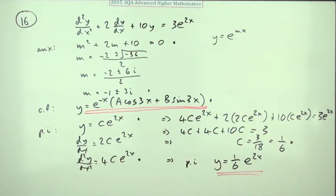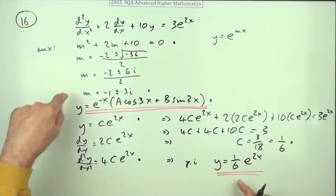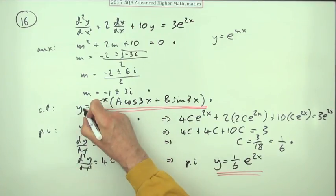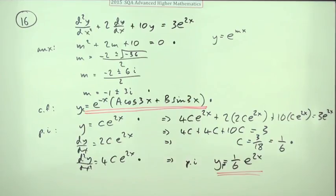There's another mark for finding c. There's no mark just for stating it back into here though. The next mark is for putting the two together to get the general solution, which just means these two parts here: the complementary function and the particular integral.